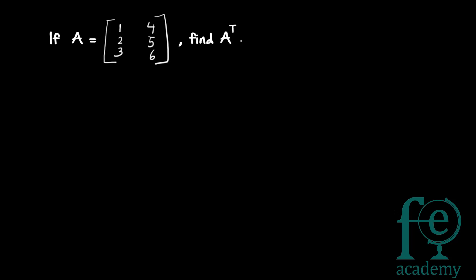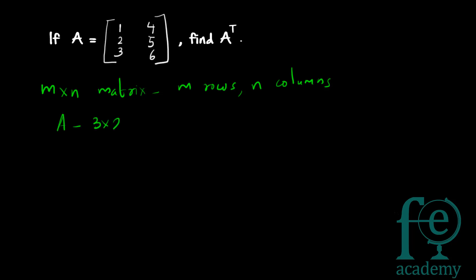A matrix is an array of numbers. An m cross n matrix means it will have m rows and n columns. This is how you represent a matrix — m cross n, where m represents the number of rows and n represents the number of columns. This matrix A is a 3 cross 2 matrix, having 3 rows: the first row consisting of 1 and 4, the second row consisting of 2 and 5, and the third row consisting of 3 and 6. So A is a matrix with 3 rows and 2 columns.